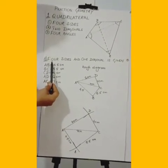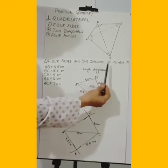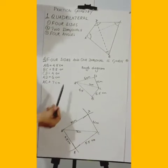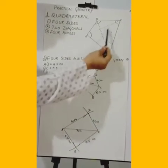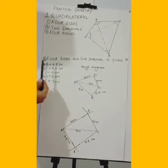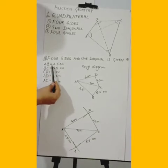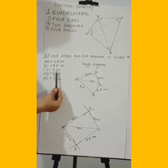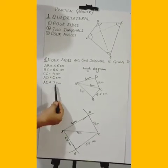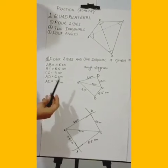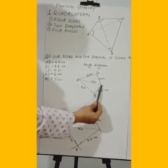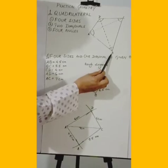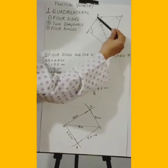The first type is when, in a quadrilateral, 4 sides and any one diagonal are given. All 4 line segments are given and any one diagonal is given. For example: AB = 4.5 cm, BC = 5.5 cm, CD = 4 cm, AD = 6 cm, and AC = 7 cm. The vertices of the quadrilateral are in cyclic order: A, B, C, D.